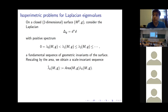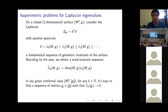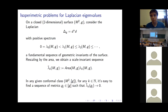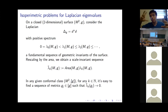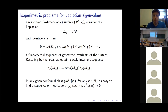We can ask about doing some variational theory on these scale-invariant eigenvalues. It's not hard to see that in any given conformal class, we can always find a sequence of metrics which makes any given area-normalized eigenvalue tend to zero. For instance, on S², if you want the first normalized eigenvalue to go to zero, you can set up a dumbbell situation with a long neck where the first eigenfunction is approximately constant in each ball and interpolates across the thin neck.